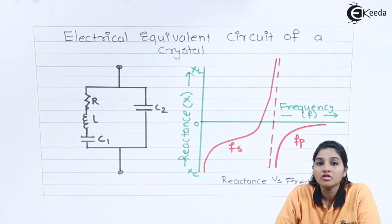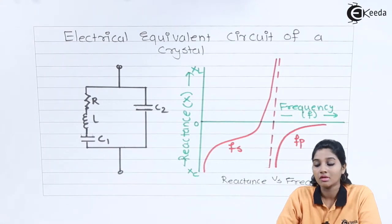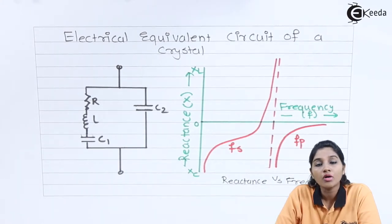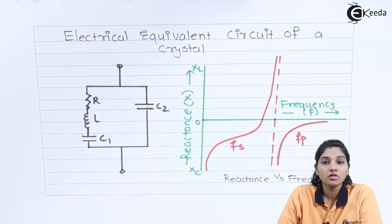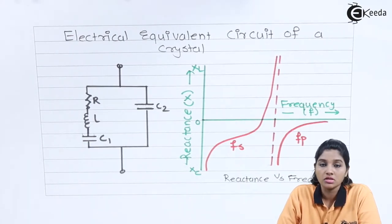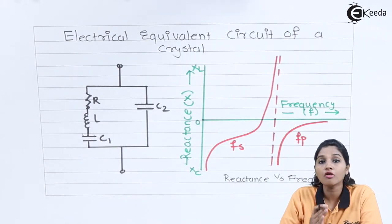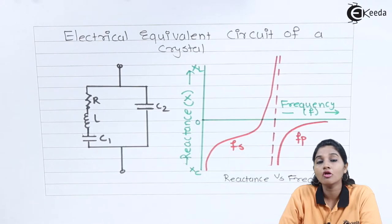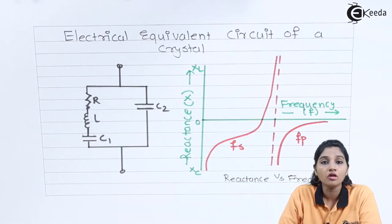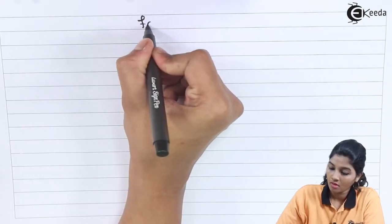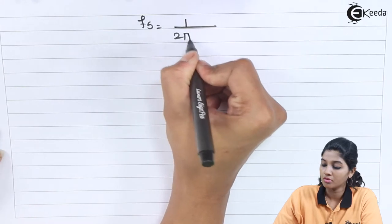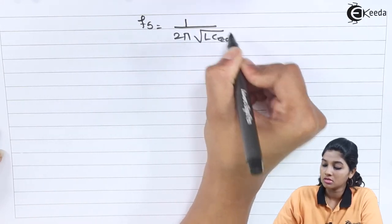The crystal oscillator has two resonant frequencies: series resonant frequency Fs and parallel resonant frequency Fp. The series resonant frequency Fs is the case where the reactance of the inductor L is equal to the reactance of capacitor C1. Therefore the series resonant frequency Fs is given by the formula: Fs = 1 / (2π √(L × C_equivalent)).